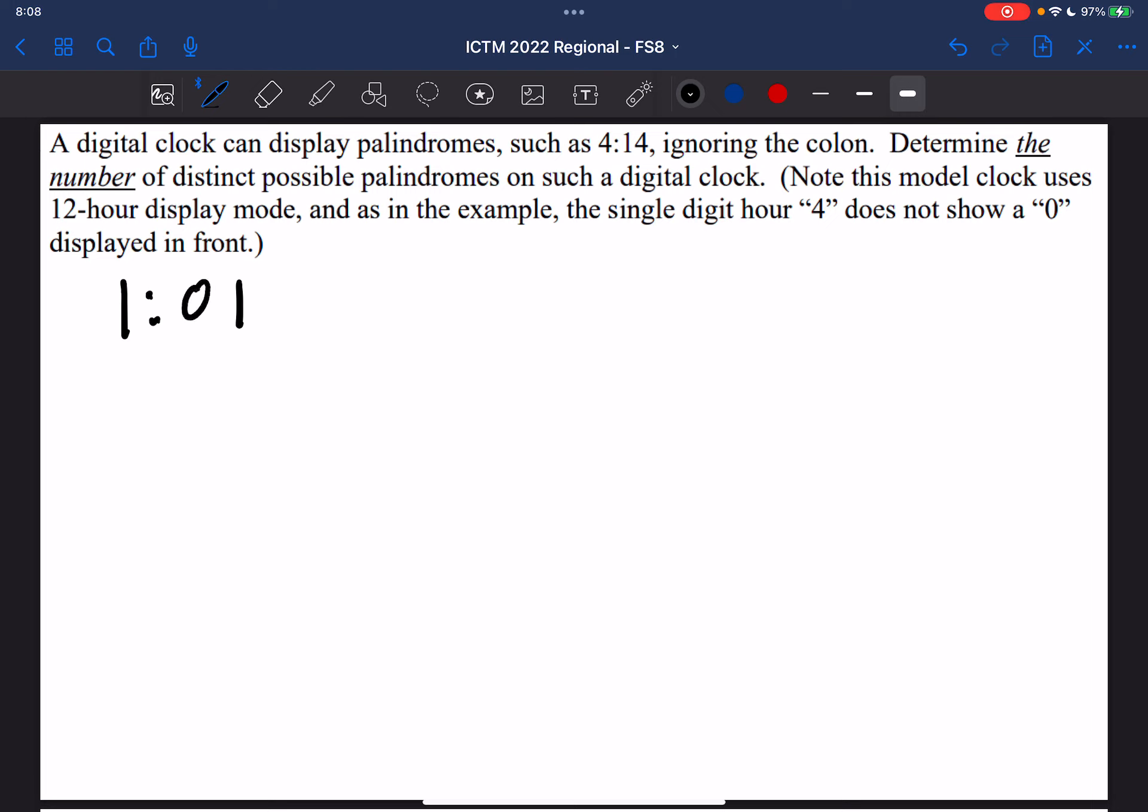So that means we could have 0, 1, 2, 3, 4, 5. So that means in the 1 o'clock hour, there are 6 different possibilities.